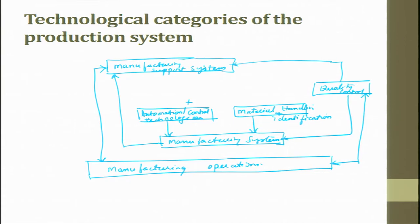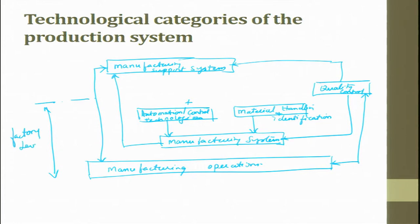If you see here: manufacturing support group, manufacturing systems, manufacturing operations, quality control systems, and material handling and identification. I can divide this into two levels — the factory level and the enterprise level. These are the technological categories of the production system.